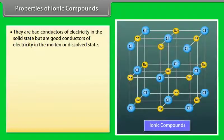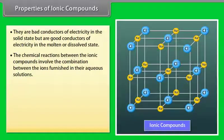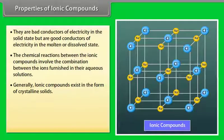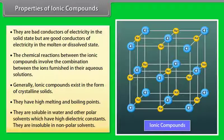Properties of ionic compounds. They are bad conductors of electricity in solid state but are good conductors in molten or dissolved state. Chemical reactions between ionic compounds involve the combination of ions furnished in aqueous solutions; such reactions are called ionic reactions. Generally, ionic compounds exist as crystalline solids. They have high melting and boiling points due to very strong electrostatic forces of attraction between oppositely charged ions. They are soluble in water and other polar solvents with high dielectric constants, and insoluble in non-polar solvents.